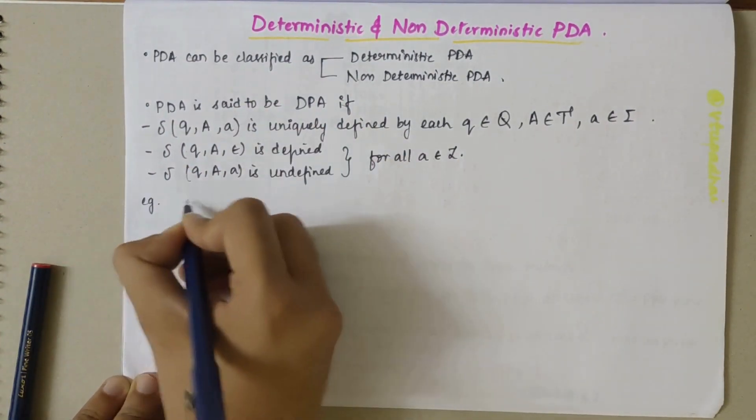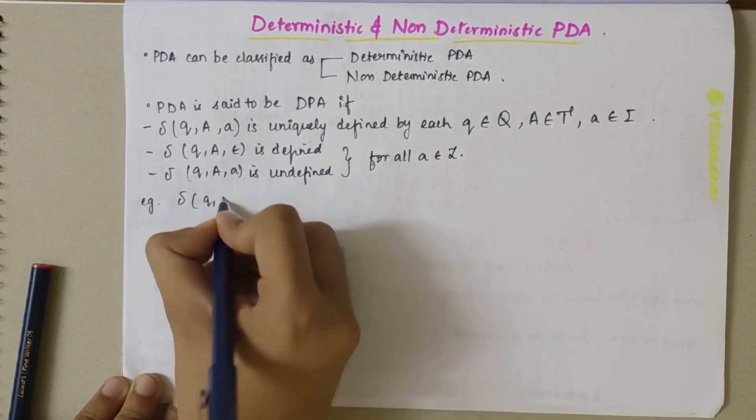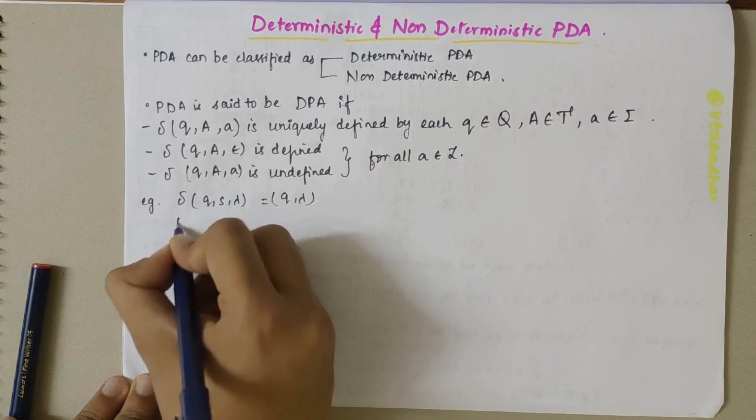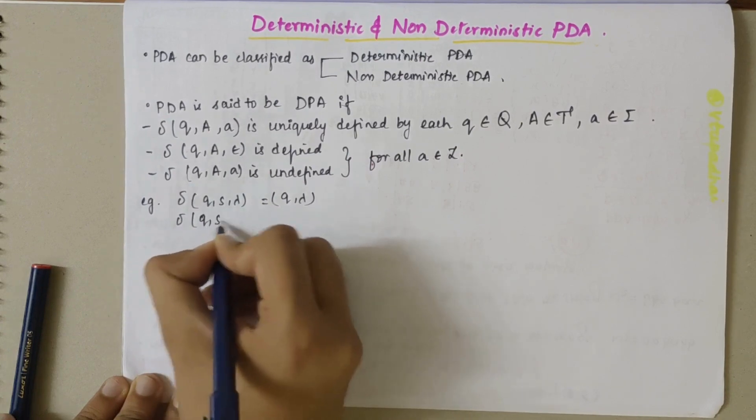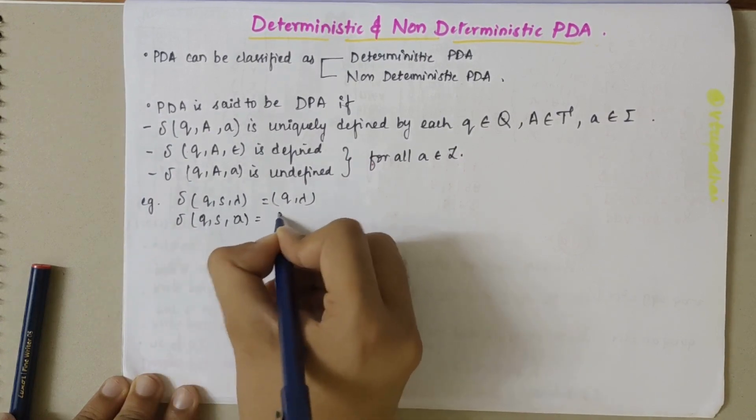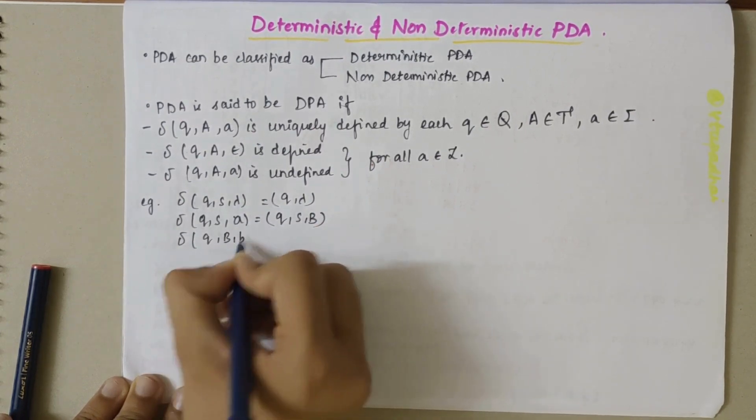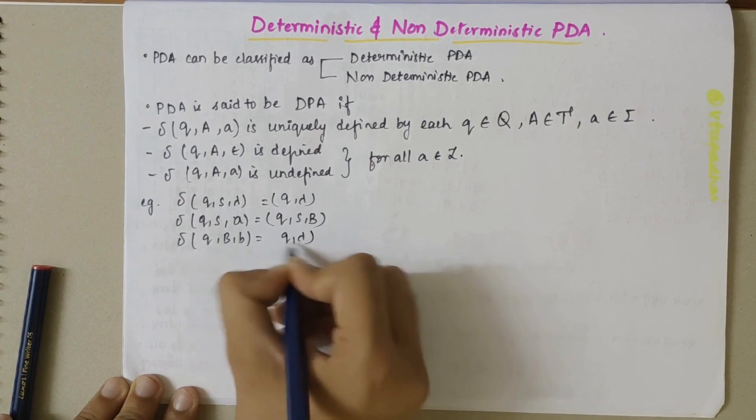Let's consider an example. Transition of Q, S, Lambda I have Q and Lambda. Transition of Q, S, A I have Q, S, B and transition of Q, B, B I have Q and Lambda.